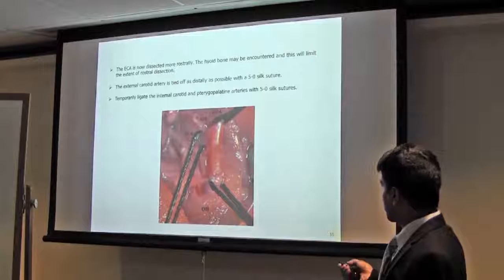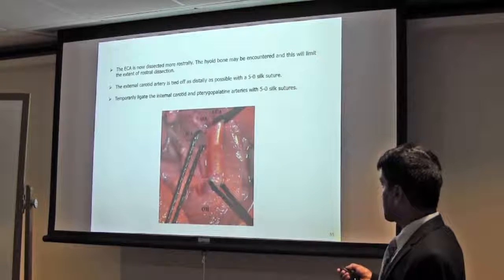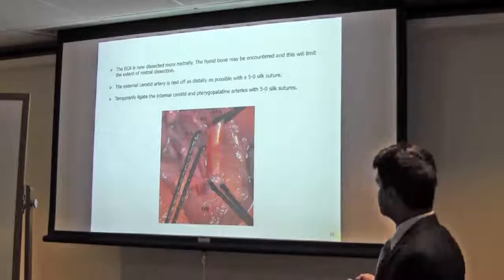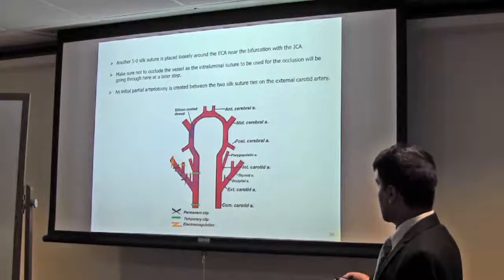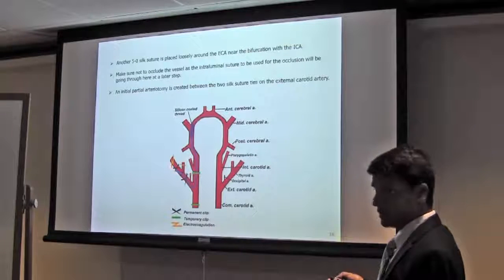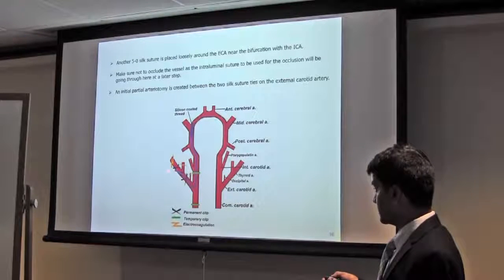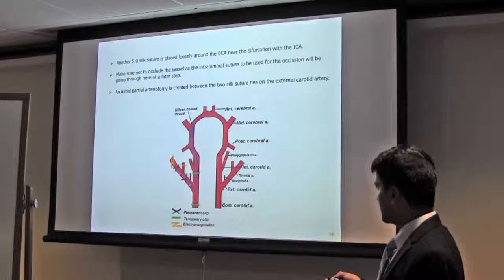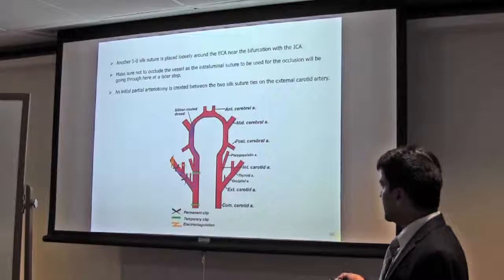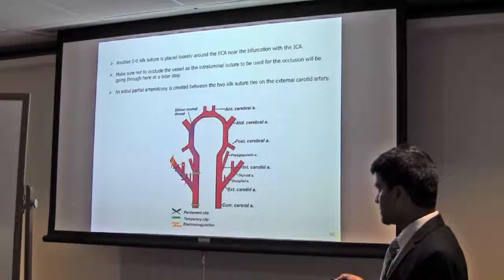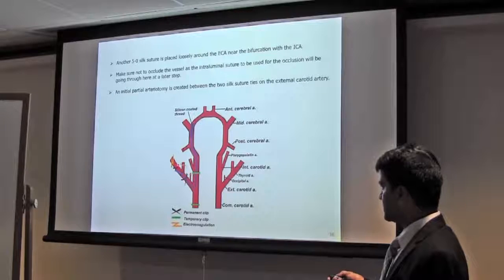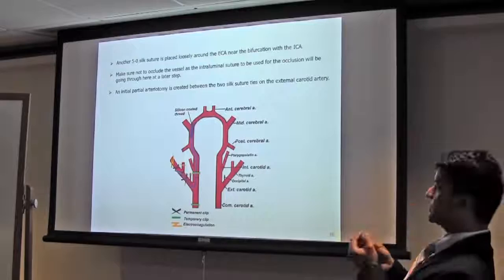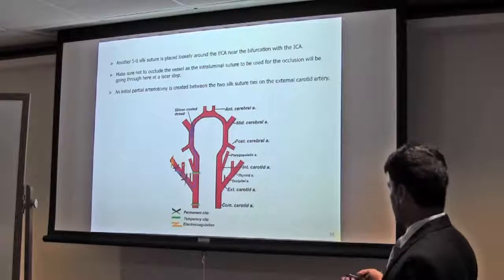When you dissect the ECA, ICA, and CCA, you can temporarily tie them with silk suture or using microclips. Then you temporarily tie the ICA and make a small hole by cutting it, and put the filament. Then just make a temporary tie here and cut completely the ECA. Then you can mobilize the ICA a little bit, so it will be straightened.